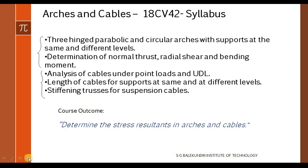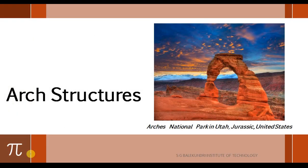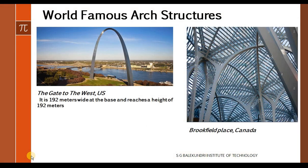Let us quickly jump into the topic. This is an arch structure you can see here, from the Arches National Park in the United States. It is a naturally formed arch structure which has been formed because of weathering of rock — nature has arch structures. Apart from that, we have some manmade arches also, like the Gateway to the West in the US and the Brookfield Place in Canada. These are the manmade modern arch structures.